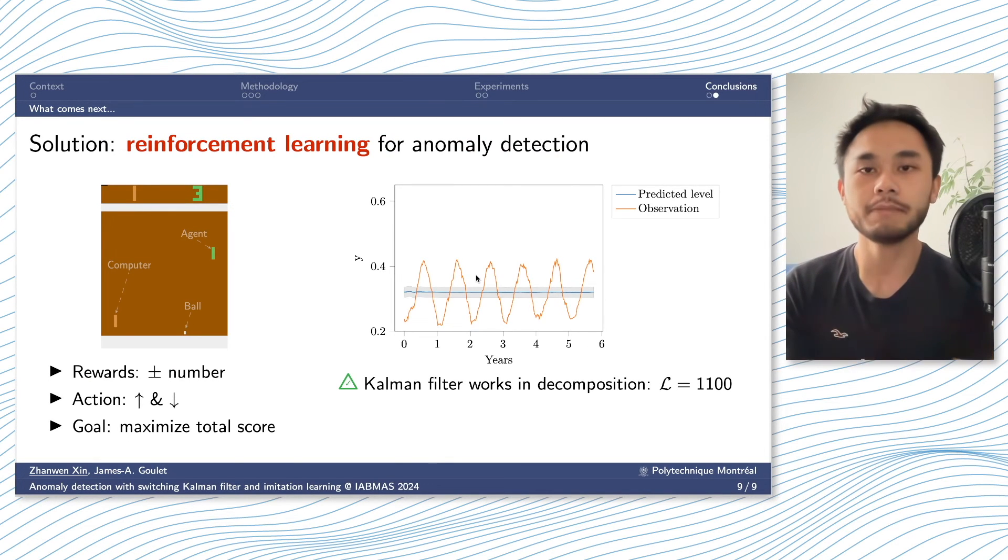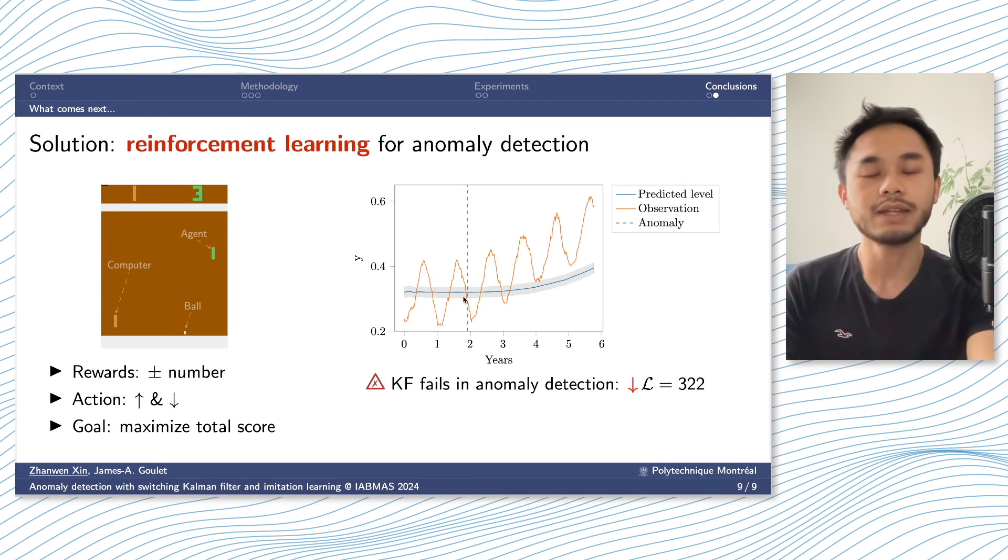And by using the same principle, we will use the reinforcement learning agents in a time series environment where we have a Kalman filter working behind. So for a stationary time series, the Kalman filter can already work well and the agent does not need to trigger any alarm. It just needs to do nothing, and it can receive a pretty high reward which is defined by the likelihood that compares its prediction with the true observation. So for this time series, it predicts well, it has a high reward.